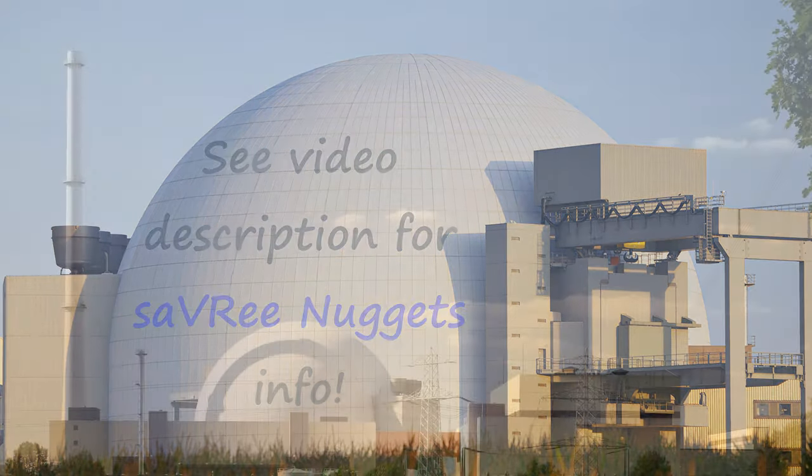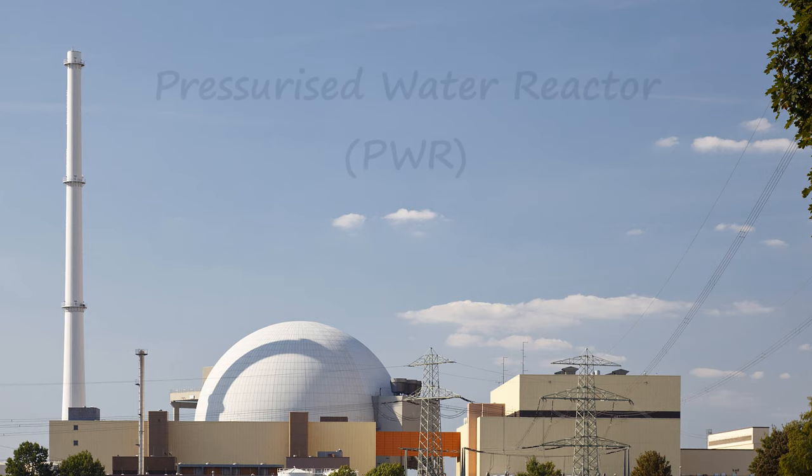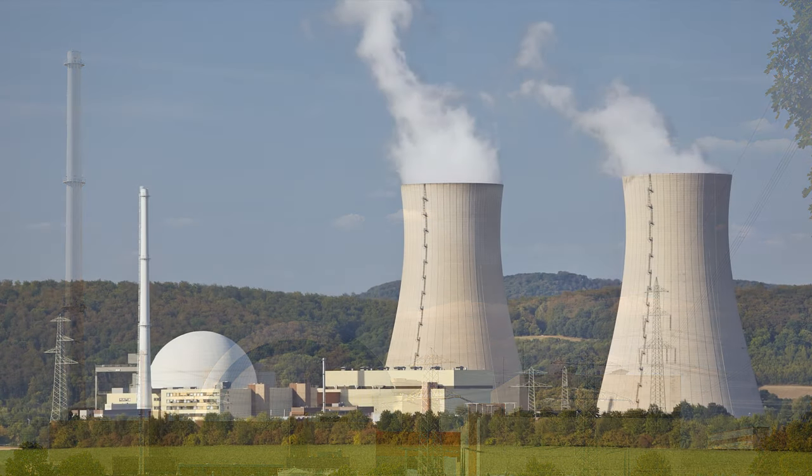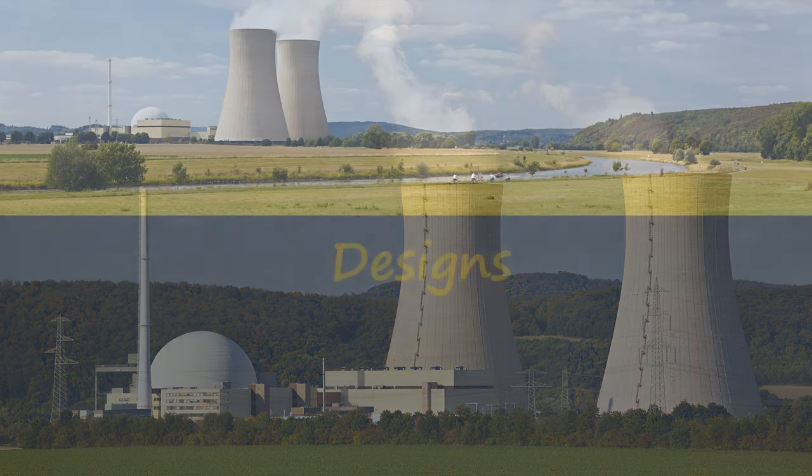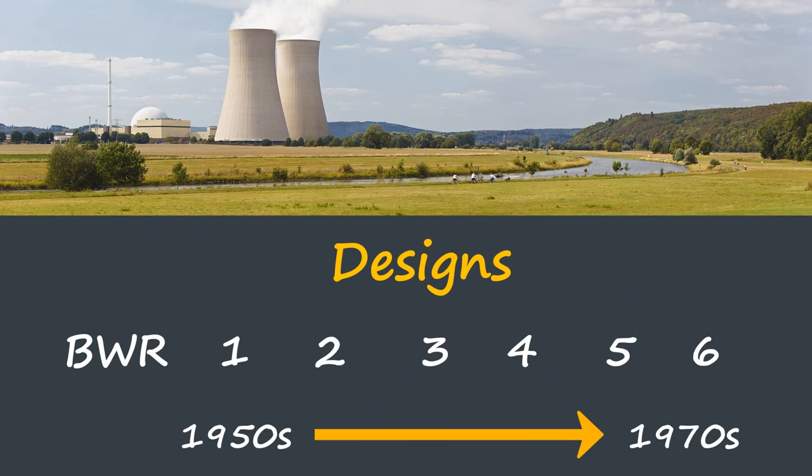Boiling water reactors are a type of light water reactor. They're used in nuclear power plants, also known as power stations, to generate heat. The other more common type of light water reactor is the pressurized water reactor, or PWR for short. But in this video, we're going to focus only on the boiling water reactor. There are about a hundred boiling water reactors in service today, all across the planet. They're split into different product lines and designs, such as BWR 1, 2, 3, 4, 5, and 6, with 1 being the earlier design and 6 being the later design.